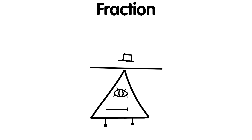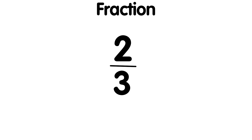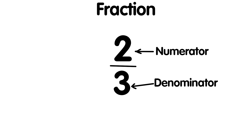A fraction is a numerical expression that shows a part of a whole. It consists of two parts: the numerator and the denominator. The numerator is the number above the fraction line — it is the number of parts we have or are considering. For example, in the fraction two-thirds, the numerator is two. The denominator is the number below the fraction line — the number of parts into which the whole is divided. In two-thirds, the denominator is three.